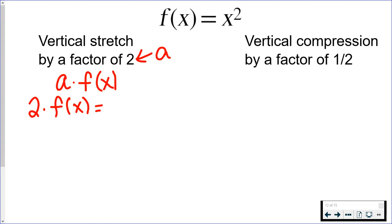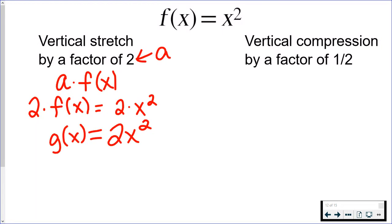My parent function is f of x equals x squared. When I apply a vertical stretch of 2, I am multiplying the entire function by 2, so this is 2 times x squared, which simplifies to 2x squared. Since I've applied a transformation, I'm going to rename it — g of x equals 2x squared. So f of x has been vertically stretched by a factor of 2.